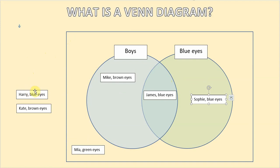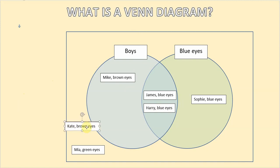Our next child to sort is a boy called Harry with blue eyes he again has got both of those properties so he goes in the intersection of those two sets and our last child is a girl called Kate who's got brown eyes so again Kate has neither of those properties she doesn't belong in either of those sets so she goes into the universal set outside the other two.